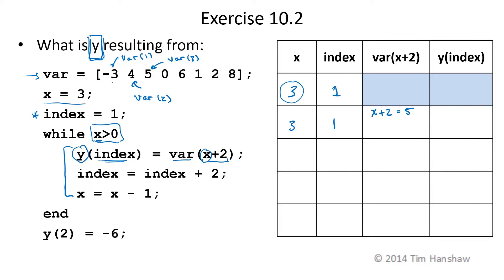So var of 5, this is the first, second, third, fourth, fifth element of var. So var of 5 has the value of 6. And Y of index becomes just that value. So this is 6.